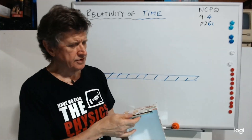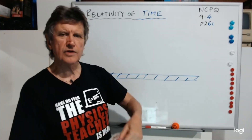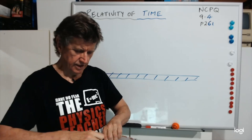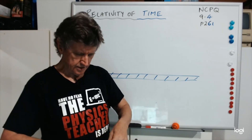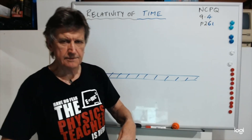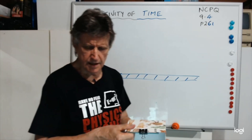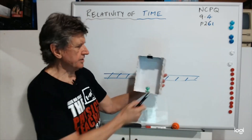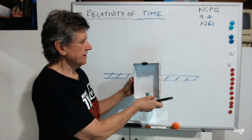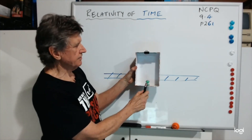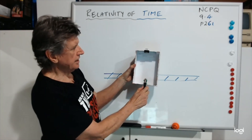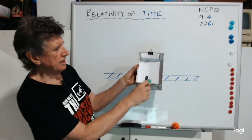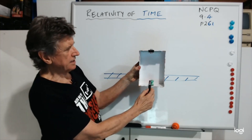I'm going to glue that to the ceiling of the carriage. So there it is there. Now let's imagine this beam of light is given off, and it hits the mirror — you can see it hitting the mirror — and it comes back down.